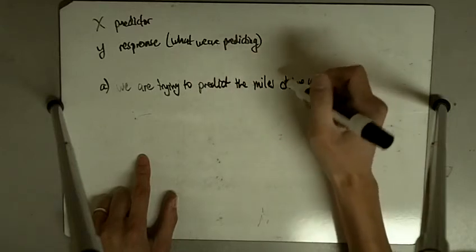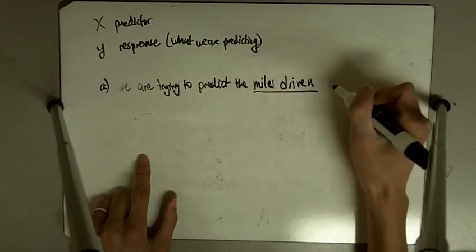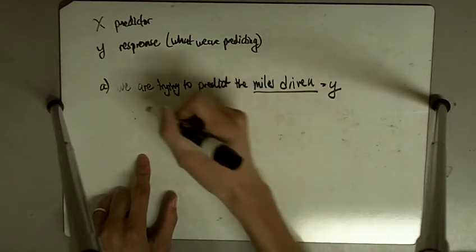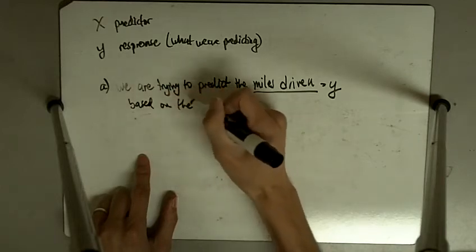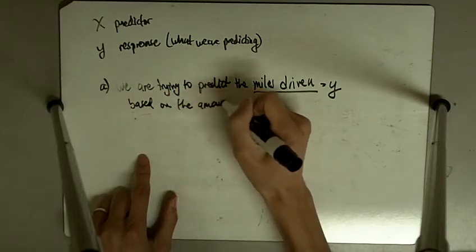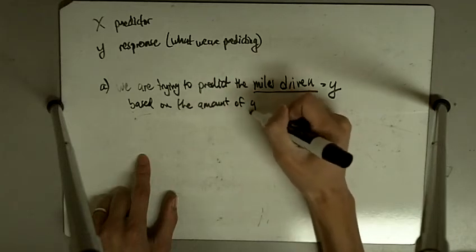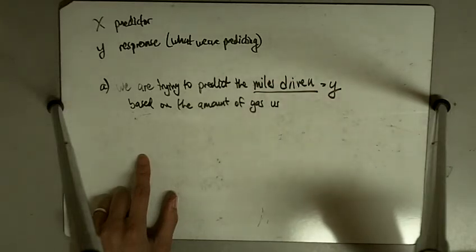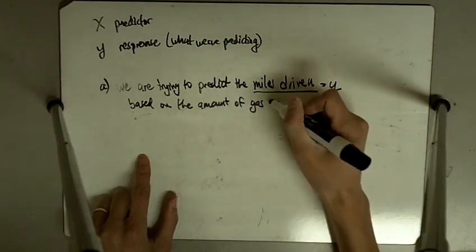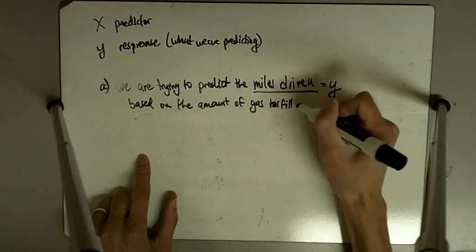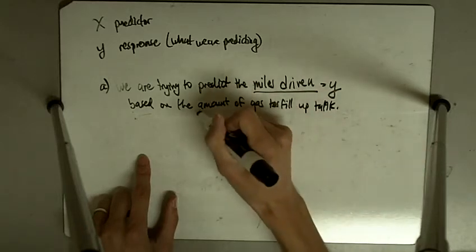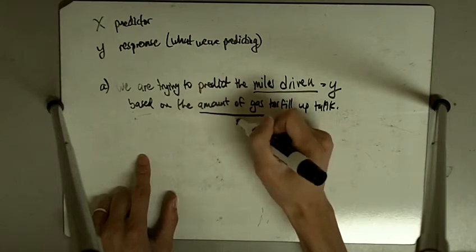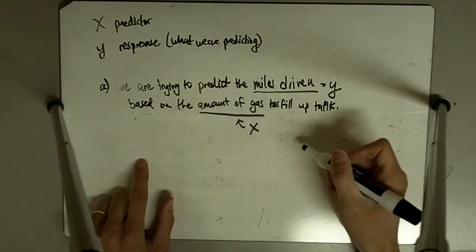So the miles driven is going to be our response, our y. And this is based on the amount of gas used, or gas it takes to fill up the tank. So the amount of gas, that's going to be our x, our predictor variable.